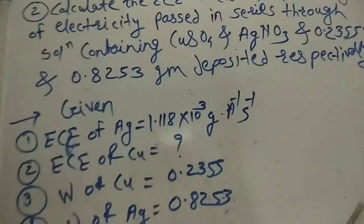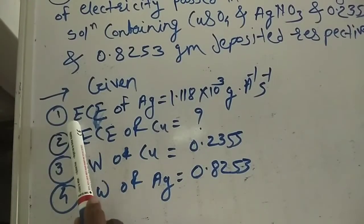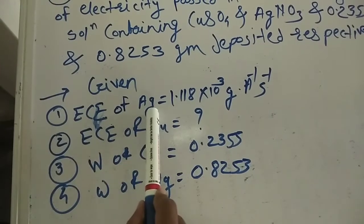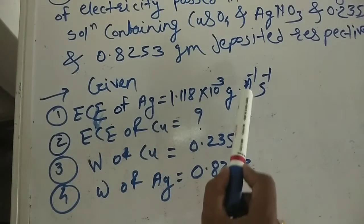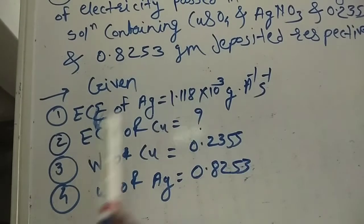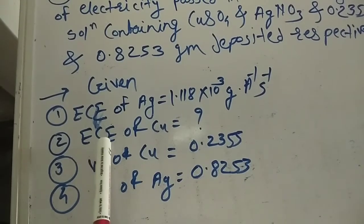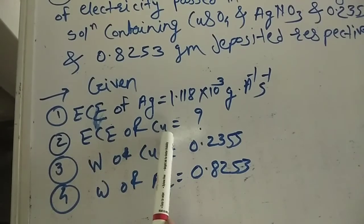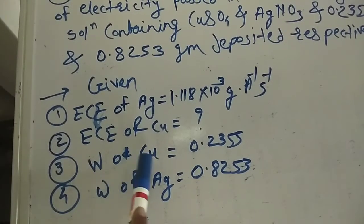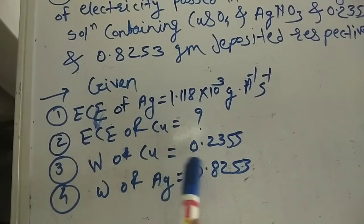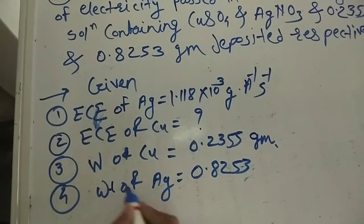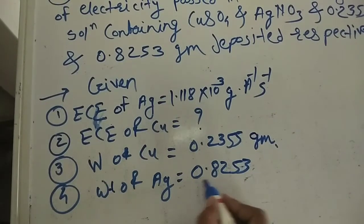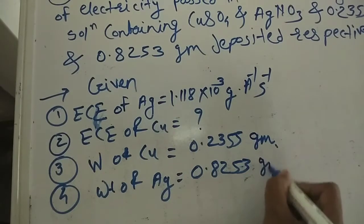In this problem, the electrochemical equivalence of silver is given as 1.118 × 10³ gram per ampere per second. We need to find the electrochemical equivalence of copper. The weight of copper deposited is 0.2355 gram and the weight of silver deposited is 0.8253 gram.